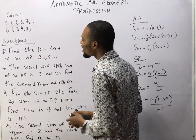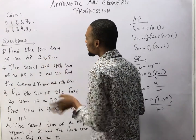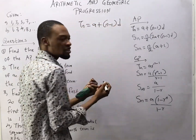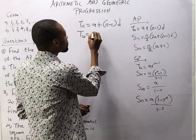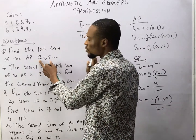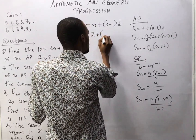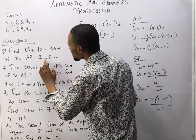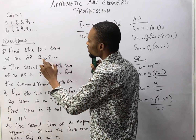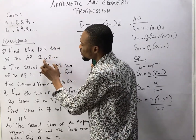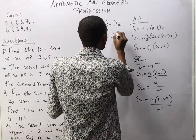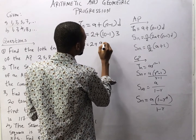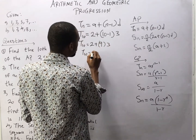The first question says: find the tenth term of the AP 2, 5, and 8. The nth term of an AP is A + (n − 1)D, so the tenth term is when n = 10. A = 2, and the common difference D = 5 − 2 = 3 (confirmed by 8 − 5 = 3). So T10 = 2 + (10 − 1) × 3 = 2 + 9 × 3 = 2 + 27.